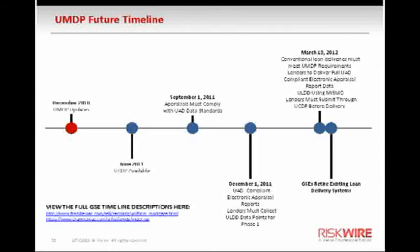The next item that will take place is in the upcoming June, which is only four months away. The UCDP portal will become available, meaning that lenders will be able to start submitting electronic appraisals into the UCDP and arrange the workflow in a way that makes sense.